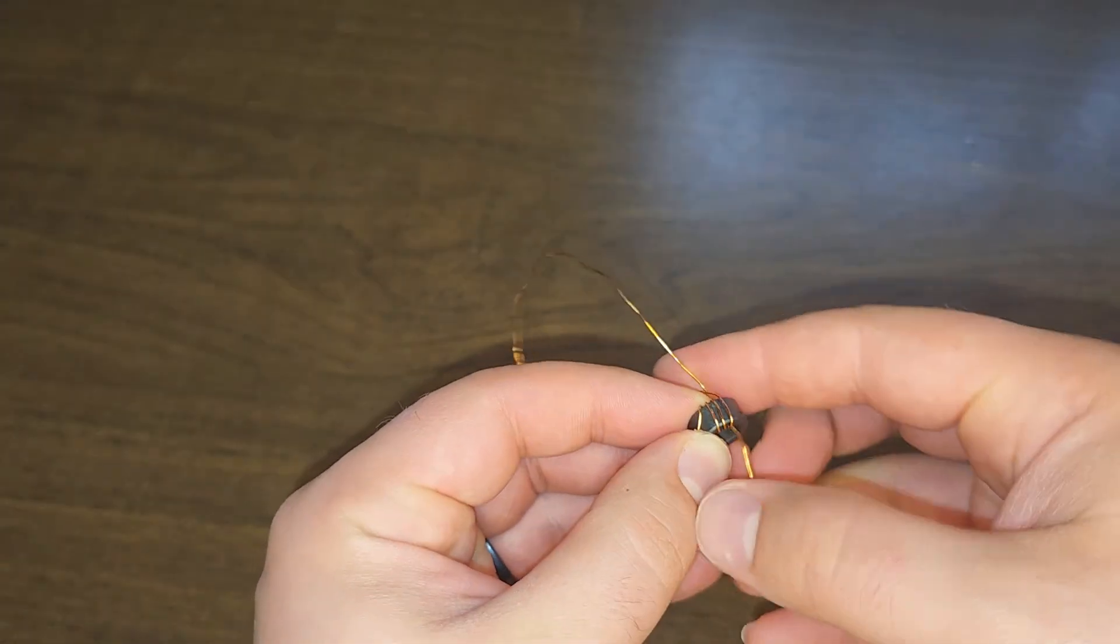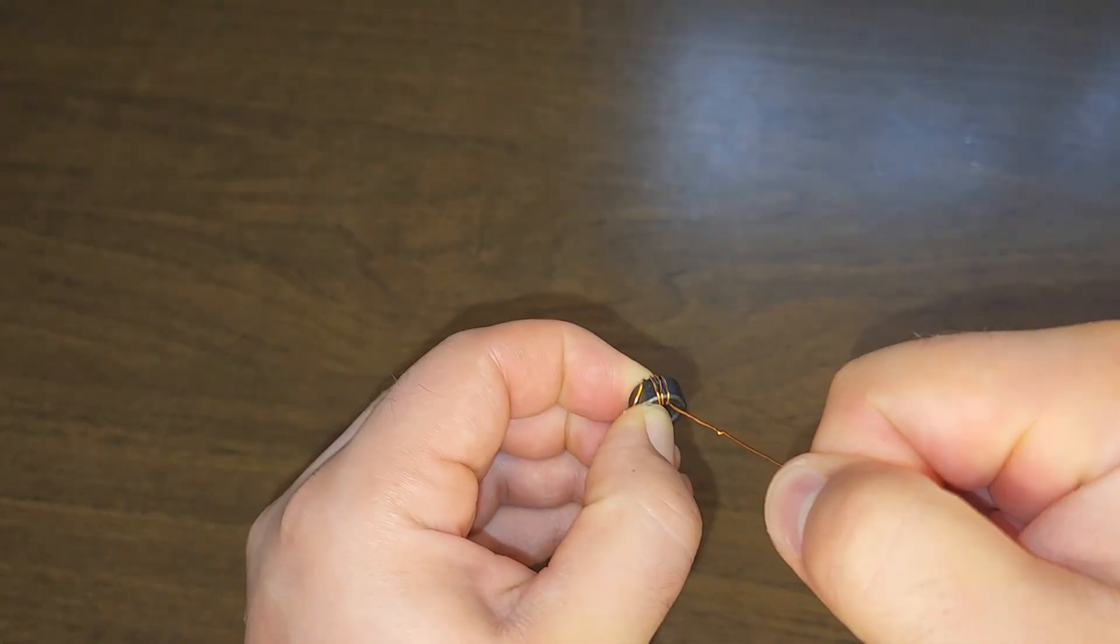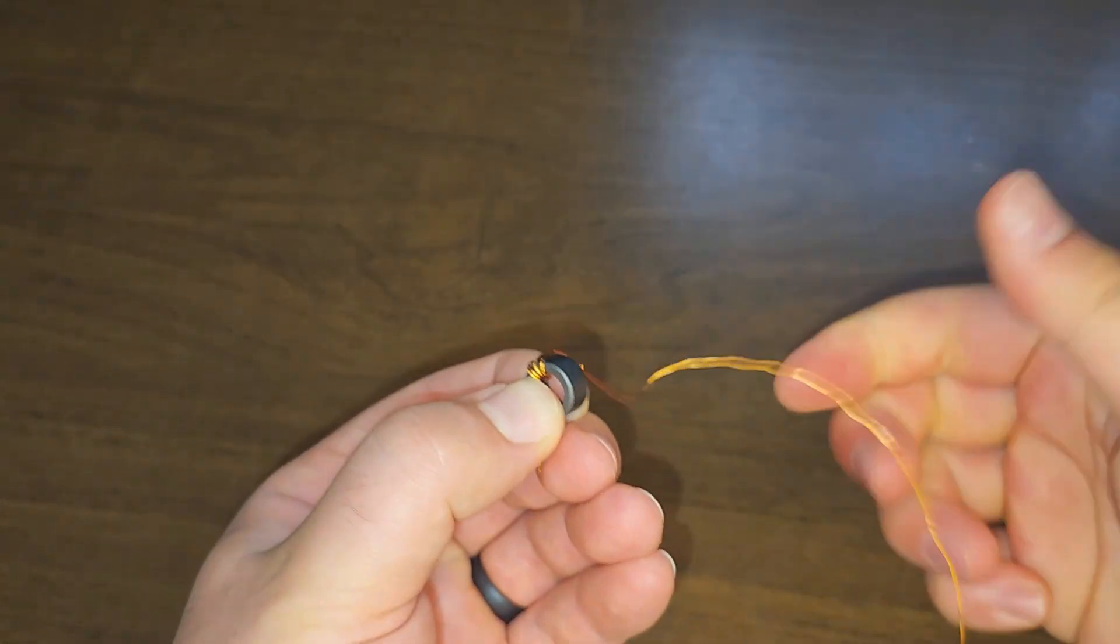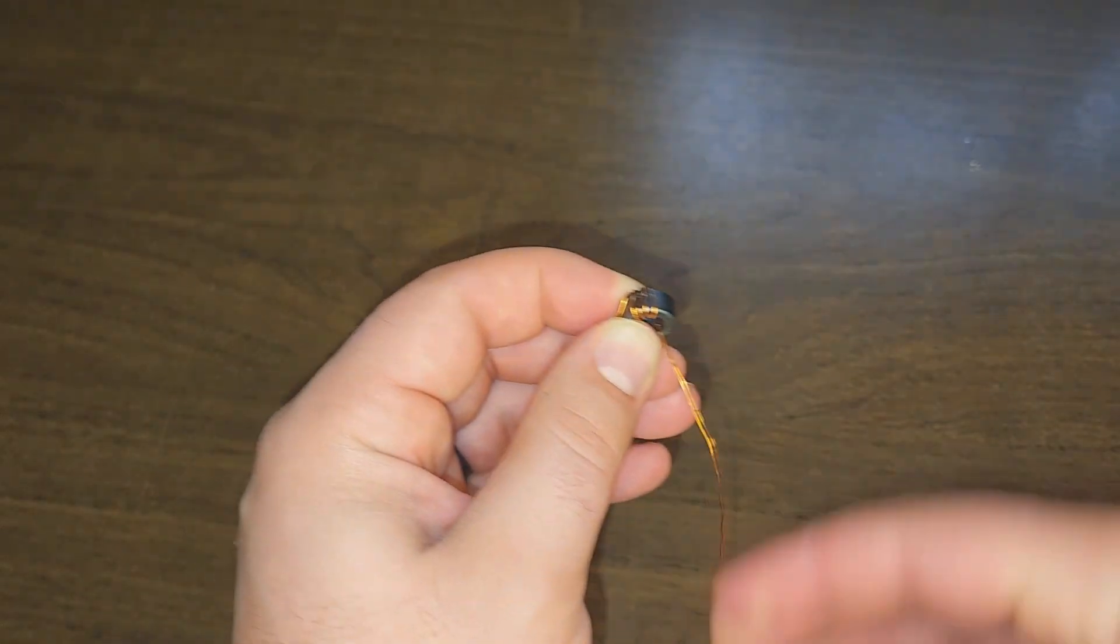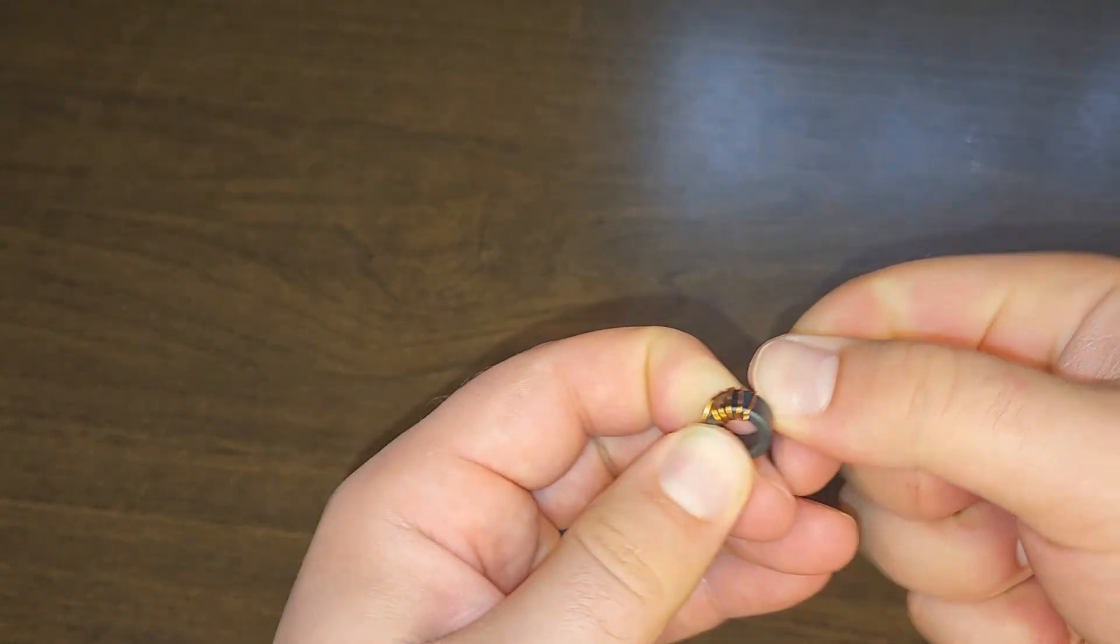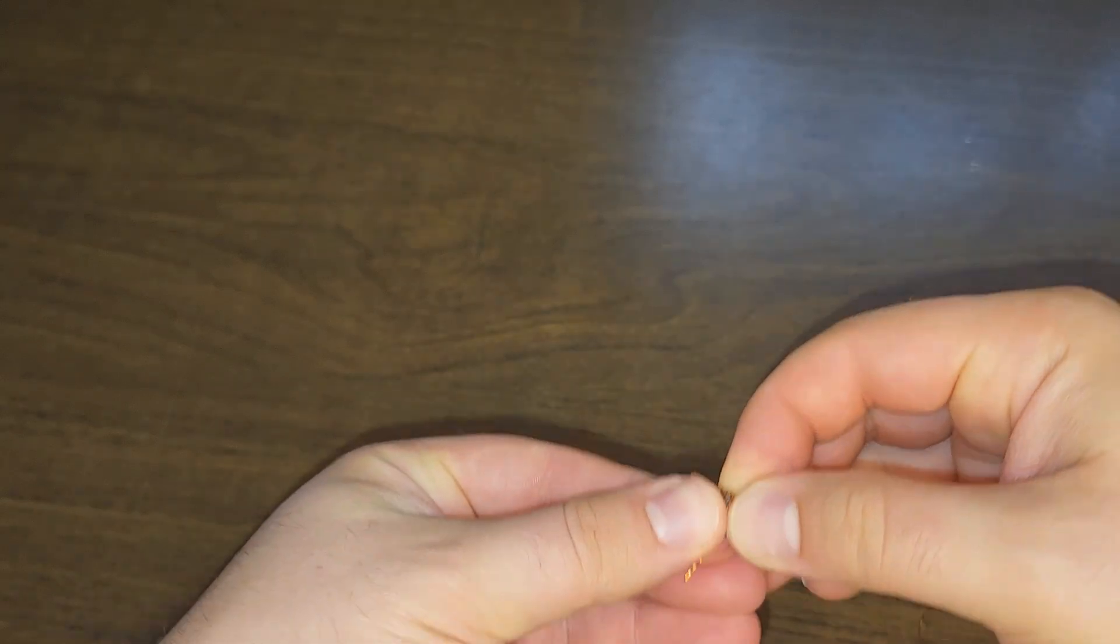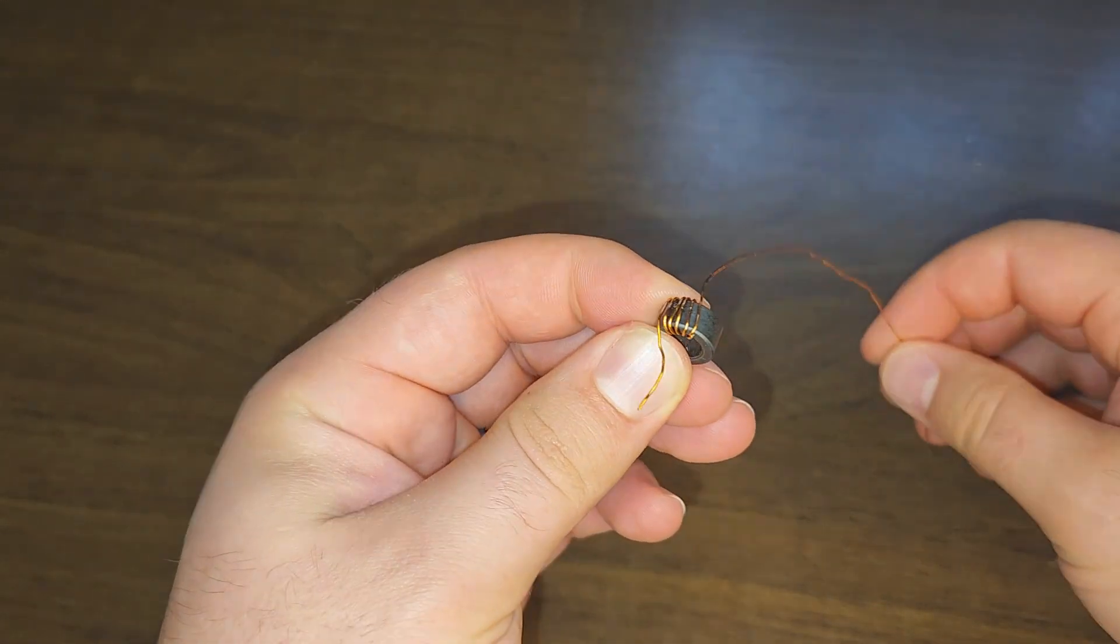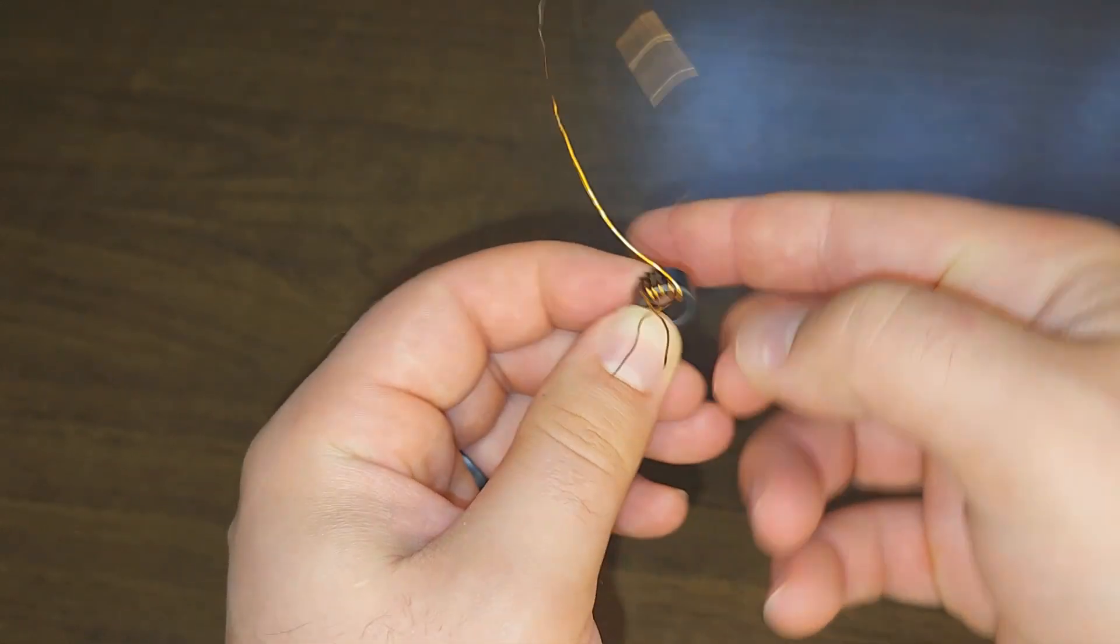I'm going to start things off by winding my toroid core. This part's a little tricky the first time but here's how I do it. You'll need two wires. I'm using 0.6 millimeter and 0.25 millimeter enamel coated copper wires that I salvaged out of some scrap electronics. I'm going to wind both of them around my core 14 times each.